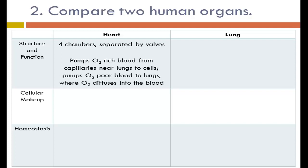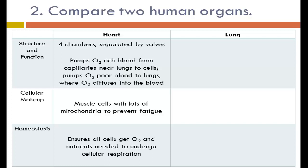The heart pumps oxygen-rich blood from the capillaries near the lungs to cells, and then it pumps the oxygen-poor blood to the lungs, where oxygen diffuses into the blood. The heart is made of muscle cells, and these muscle cells have lots of mitochondria — higher than we would see in other human body cells. This is to prevent fatigue, as the heart always needs to be pumping. This helps to maintain homeostasis by ensuring that all cells are getting the oxygen and nutrients needed to undergo cellular respiration.